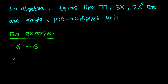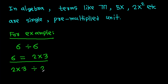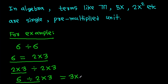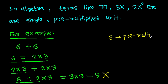Consider 6 divided by 6. We know that 6 is 2 times 3, so 6 divided by 6 becomes 2 times 3, divided by 2 times 3. Then 6 divided by 2 is 3, times 3, giving 9. But this is wrong, because 6 is a pre-multiplied unit — that means it is a single term.